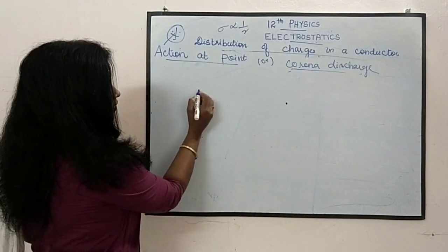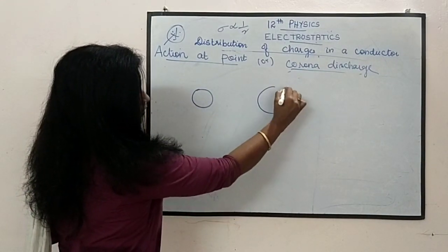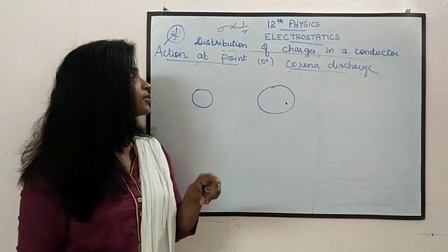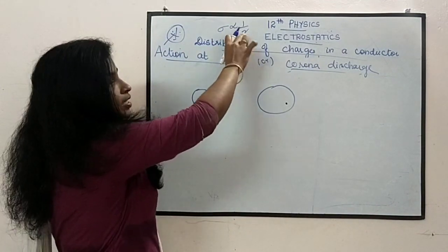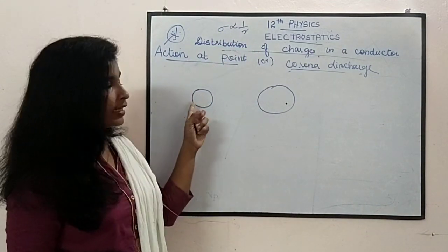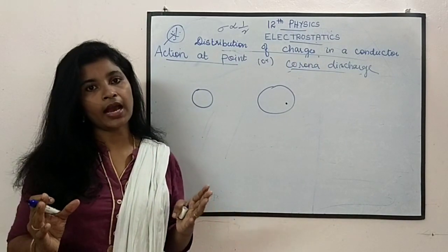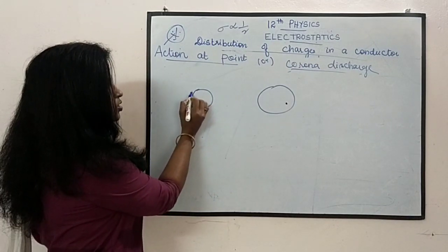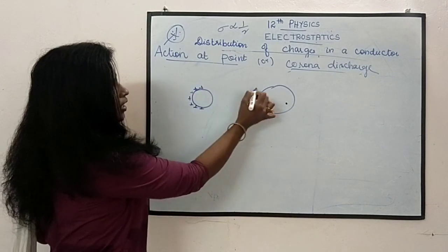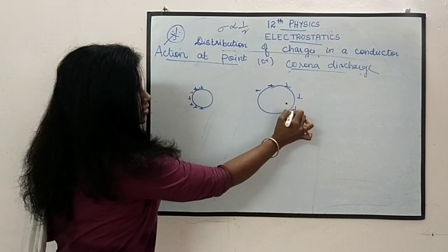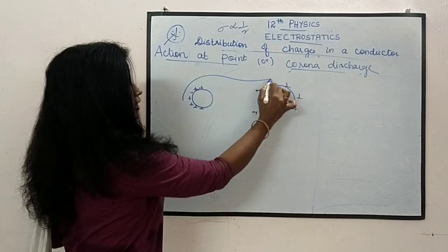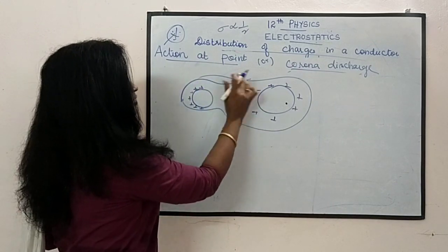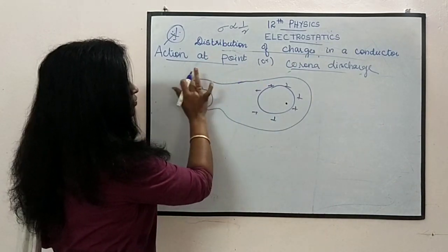Let us say we consider two metallic conductors. We also told you that always the charge density is inversely proportional to the radius. So if the radius decreases, the charge density will be high. If the radius increases, the charge density will be low. Here it is having small radius, so here the charge density will be very high. Here it is low, so the charge density will be low. Consider this as the conductor having small radius. Here it is having a very high radius.